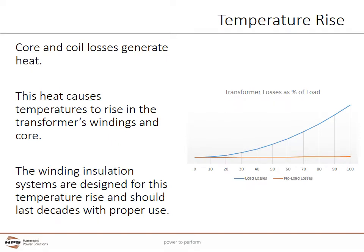A transformer's core and coil losses generate heat. As load increases, so do losses. This heat causes temperatures to rise in the transformer's windings and core. The winding insulation systems are designed for this temperature rise and should last decades with proper use.